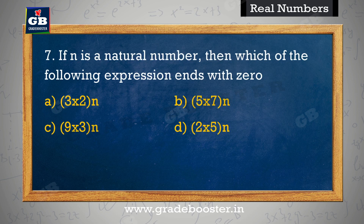If n is a natural number, then which of the following expression ends with 0? Yadi n ek natural number hai, to nimn mein se kaunsi expression 0 ke saath samapt hoti hai. A. 3×2ⁿ, B. 5×7ⁿ, C. 9×3ⁿ, D. 2×5ⁿ.